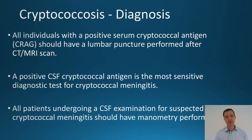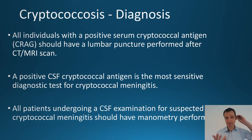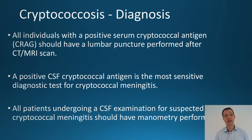How do you diagnose it? The simplest way is a blood test called a CrAg — C-R-A-G — which is a serum cryptococcal antigen. If someone has a positive CrAg, you then need to proceed to a lumbar puncture after a CT or MRI scan is performed. Usually it's a CT scan because they're quicker to obtain. You're trying to rule out other brain pathology and confirm it's safe to do a lumbar puncture — and it's very important that goes on the request form to radiology.